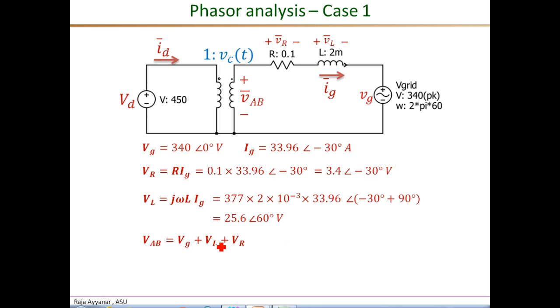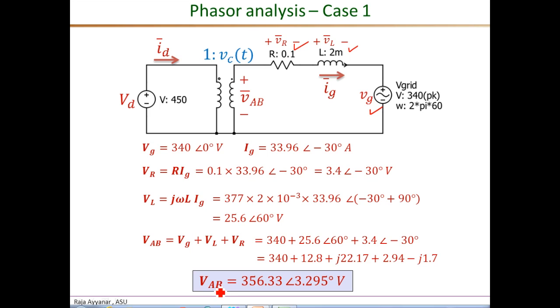Now we are in a position to calculate the VAB phasor, which is simply the sum of the grid voltage, the inductive drop VL, and the resistive drop VR. VAB equals VG plus VL plus VR. Substitute the corresponding values: VG is 340 angle 0, VL is 25.6 angle 60 degrees, and VR is 3.4 angle minus 30 degrees. You can convert the polar form into rectangular form to do the addition. Finally, we get the VAB phasor to be a magnitude of 356.33 volts with a phase angle of 3.295 degrees.